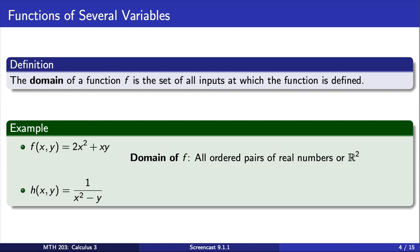On the other hand, the function h is not defined whenever x² - y is equal to 0. Therefore, the set of inputs for which h is defined is all ordered pairs such that x² does not equal y.